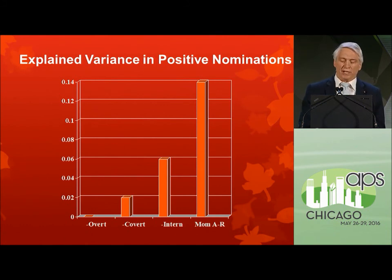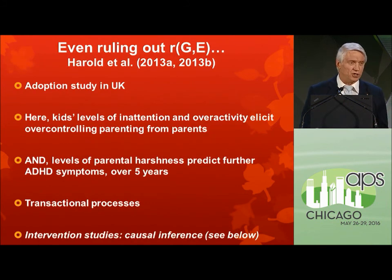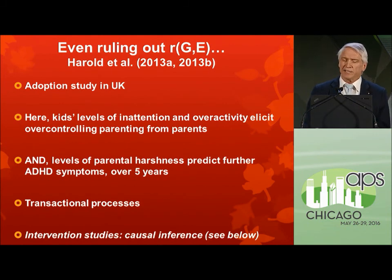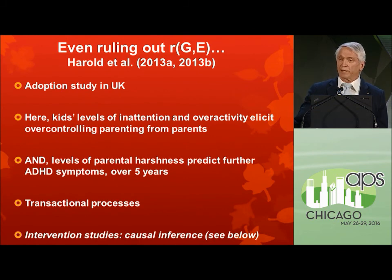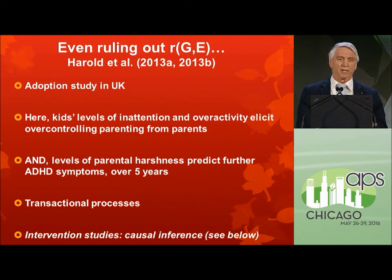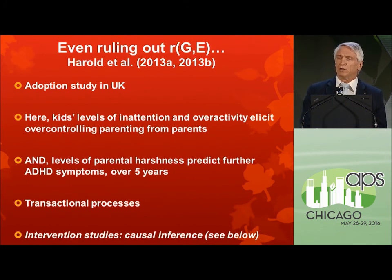If you believe in gene-environment correlation, you'd say that can't happen — or it's because of shared genes. But in the important adoption research of Gordon Harold and colleagues, published three falls ago in adoptive samples, we find very similar patterns. Early ADHD symptoms predict over-controlling, non-authoritative parenting. And that same parenting, controlling for everything else, predicts the maintenance of ADHD symptoms over the next half decade. So parenting does matter, even if you take gene-environment correlation out of the equation.